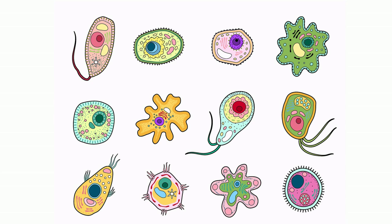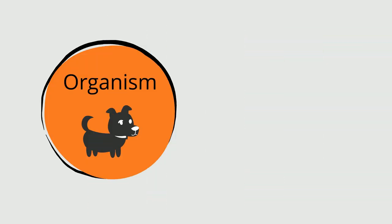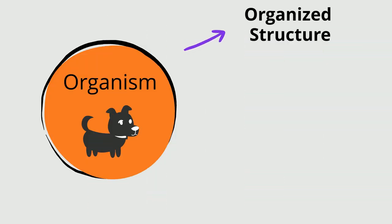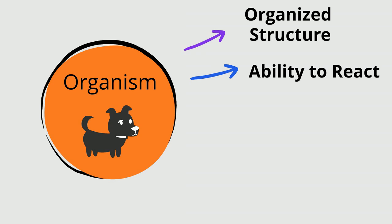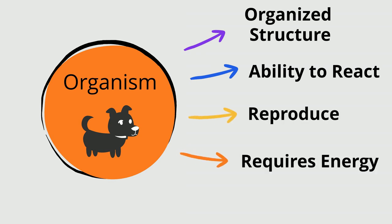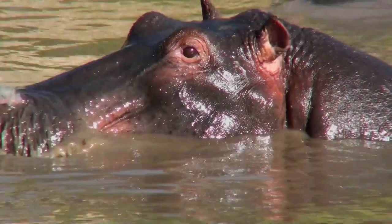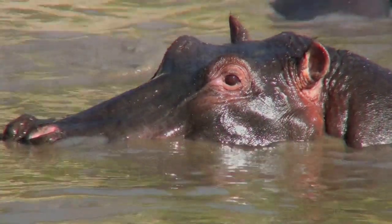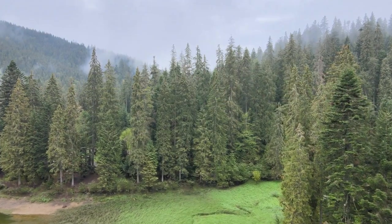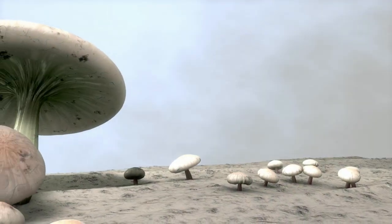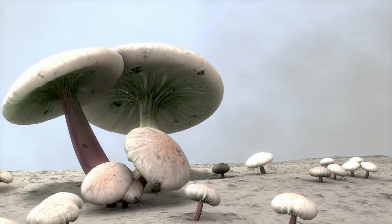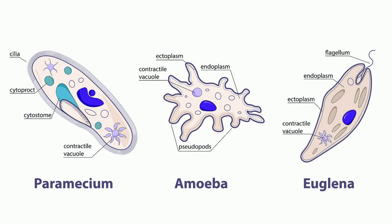An organism refers to a living thing that has an organized structure, can react to stimuli, reproduce, requires energy, plus grows and adapts. Examples include animals, plants, fungi, protists, and many, many more.